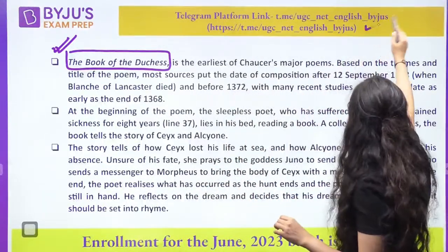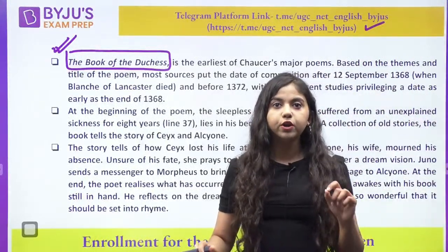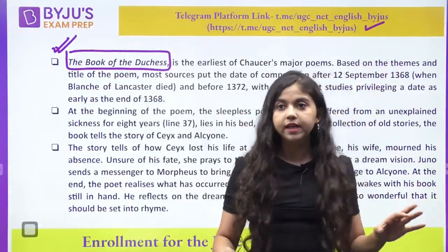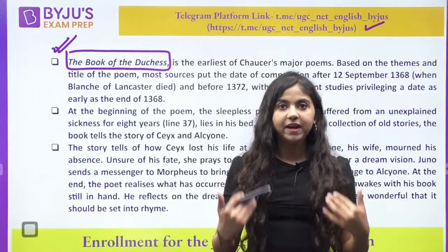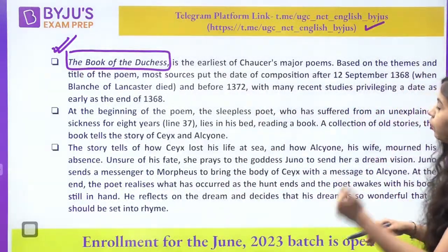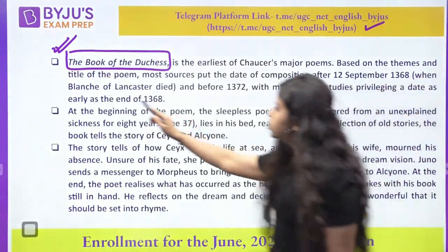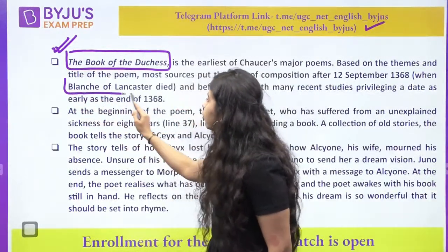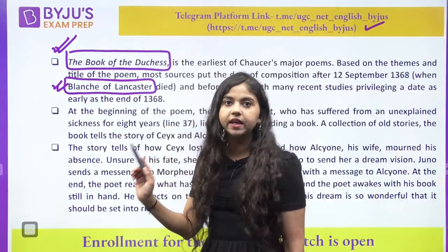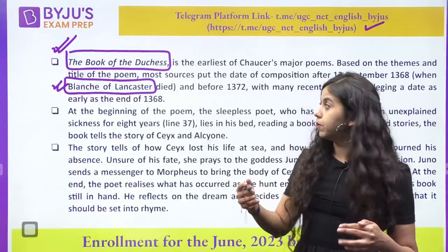Because your exam dates are almost around the corner, please make sure that you stay connected with me. I will be aggressively making sure that we meet you all regularly. So the Book of Duchess — what are we able to see? This becomes an example of an elegy. When John of Gaunt, who was the patron of Chaucer, suffered the death of his wife, Book of Duchess was written. Chaucer was also kind of a public figure.